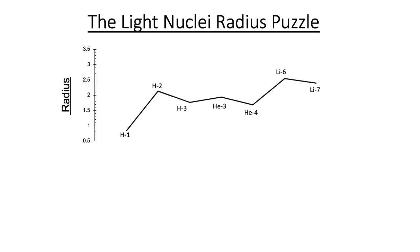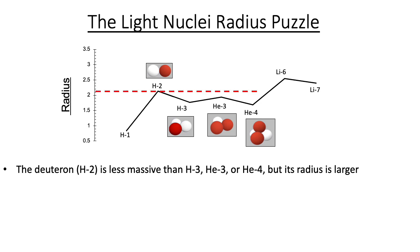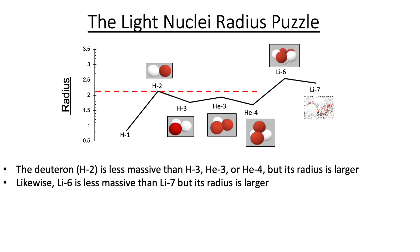The radius-to-mass of light nuclei is quite puzzling. The deuteron, for example, is less massive than either tritium, helium-3, or helium-4, and yet its radius is somehow larger. Similarly, lithium-6 is less massive than lithium-7, but its radius is larger. Nuclear structures based on red and white spheres do not explain this puzzle.